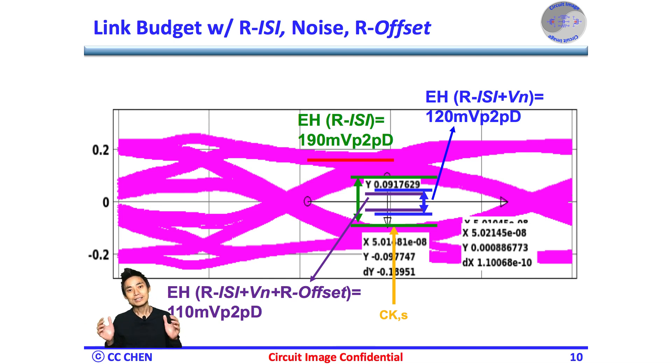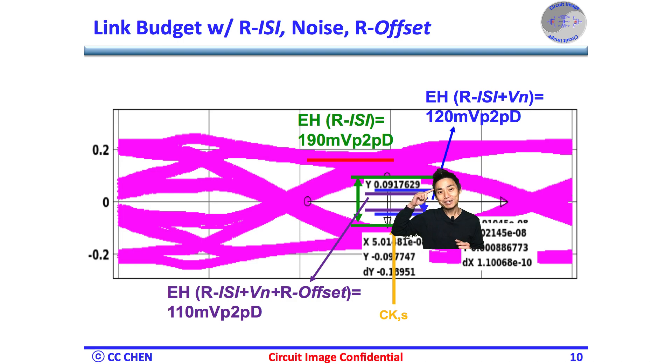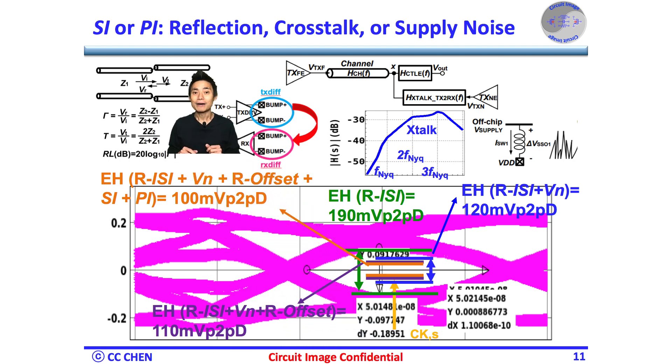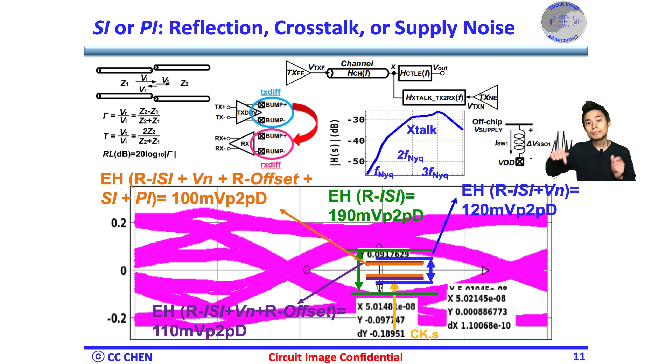In addition to low circuit images, what else could be the system impairment of eating the eye height margin? Think about the interference images for 5 seconds. Correct, the system may have an impedance discontinuity causing reflection, the mutual magnetic coupling causing the crosstalk, or poor power supply impedance causing the huge supply noise.